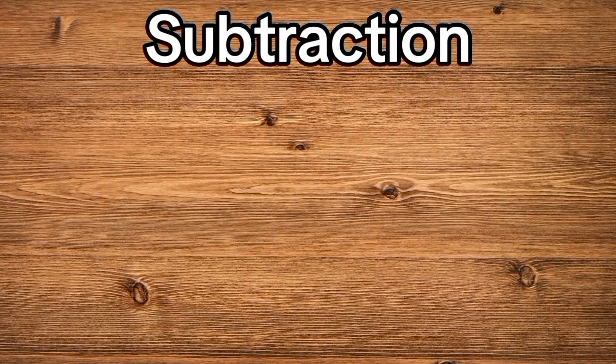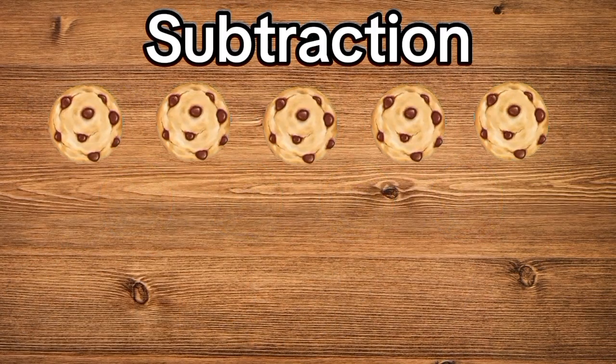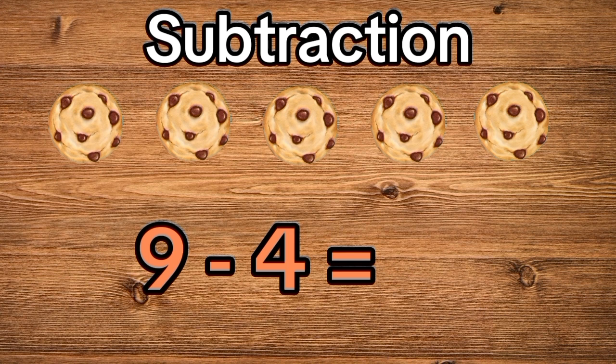What if we start with nine cookies and give four to our friends? That's nine minus four. Let's see how many are left: one, two, three, four, five. We have five cookies left.